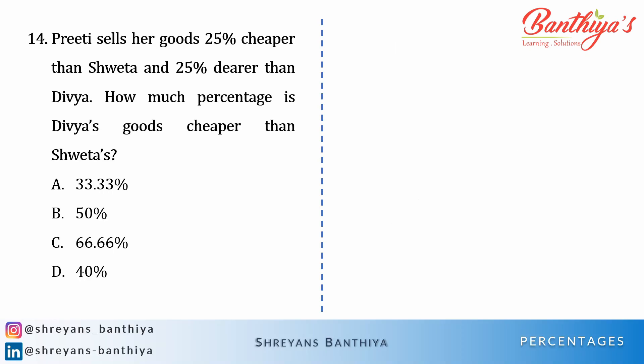Now let's see the 14th question. Priti sells her goods 25% cheaper than Shweta and 25% dearer than Divya — dearer means higher. So Priti sells 25% cheaper than Shweta: if Shweta sells for 100 rupees, Priti sells for 75. And 25% dearer than Divya: if Divya sells for 100, Priti sells 25% higher. Note that 'and' is used here — the basic subject is always Priti. We are talking about Shweta in reference to Priti, and Divya in reference to Priti. How much percent are Divya's goods cheaper than Shweta's?